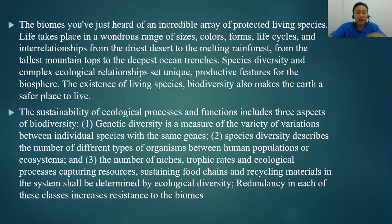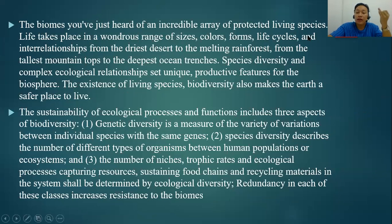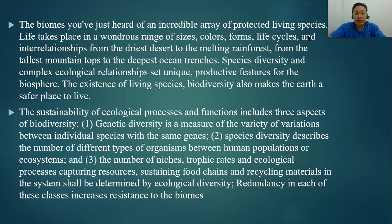Let's review first the biomes. The biomes you've heard about from Lesson 6 include an incredible array of protective living species: the taiga, the tropical rainforest, the temperate forest, the desert, the grassland, and so on. Life takes place in a wondrous range of sizes, colors, forms, life cycles, and interrelationships — from the driest desert to the melting rainforest, from the tallest mountain tops to the deepest ocean. Species diversity and complex ecological relationships set unique productive features for the biosphere.